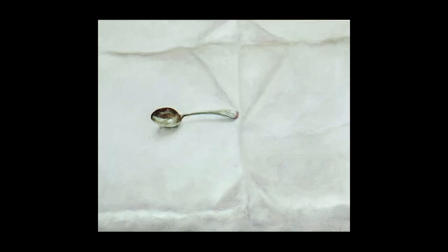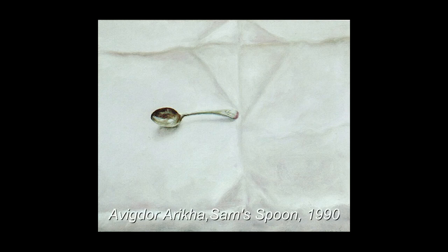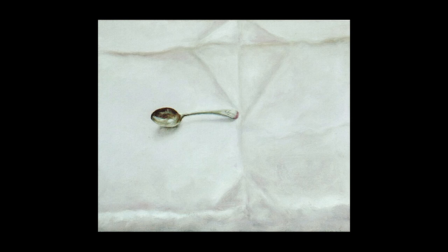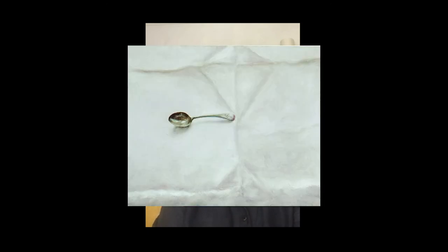This beautiful painting, titled Sam's Spoon by Avigdor Arikha, shows the passing of time in the light and the shadows, in the creased cloth and in the spoon — given as a memento to the artist's daughter on her birth by the writer Samuel Beckett, with Beckett's name engraved on the handle of the spoon that had been Beckett's christening spoon, painted on the first anniversary of Beckett's death.